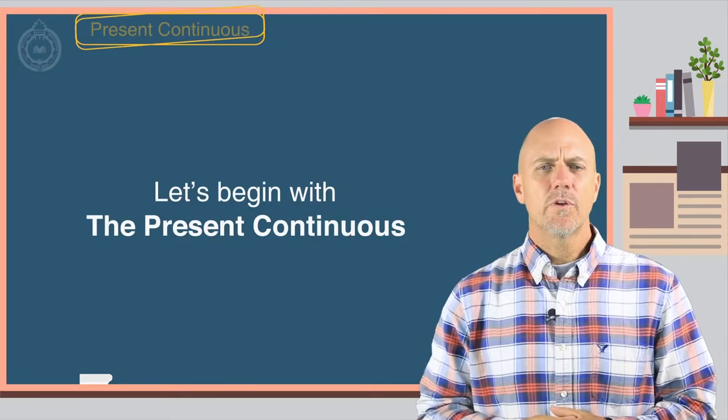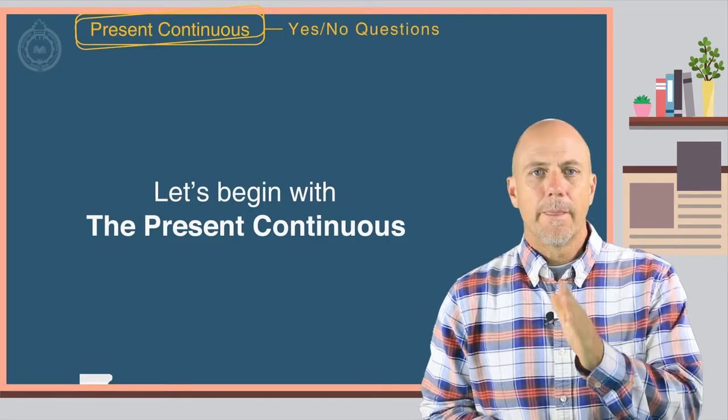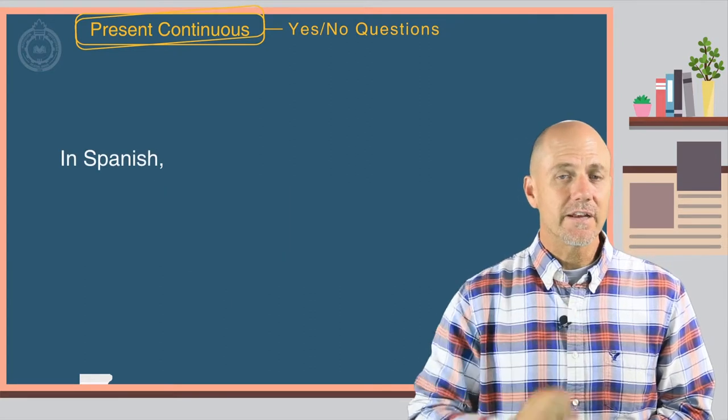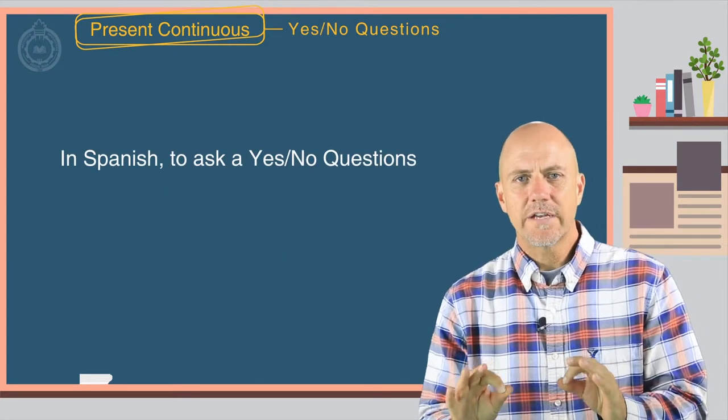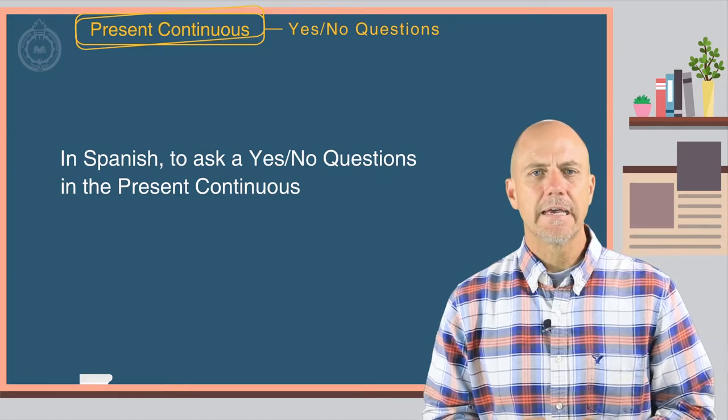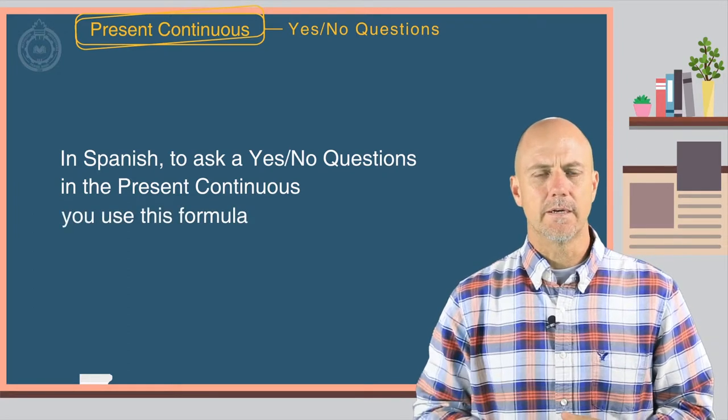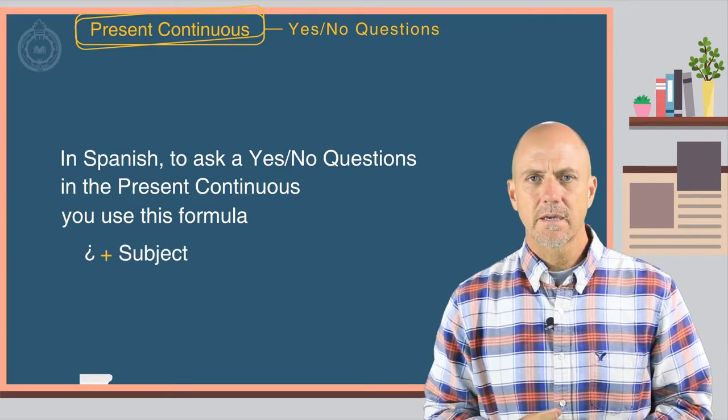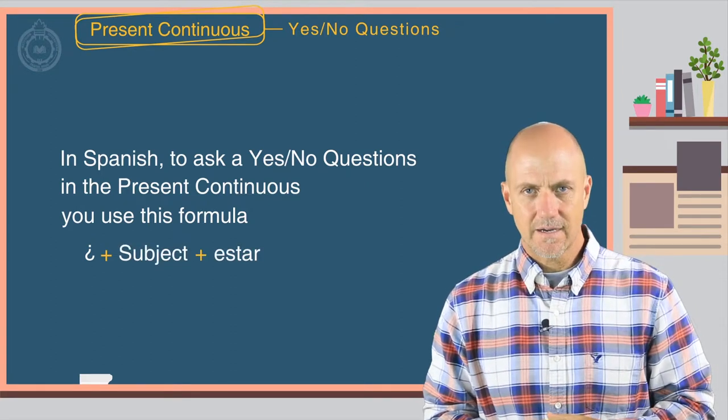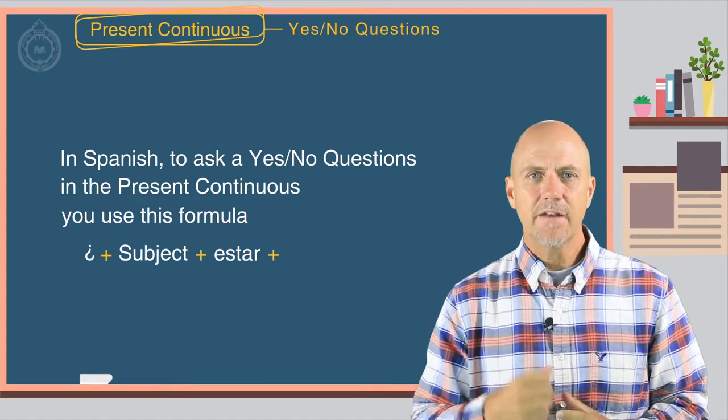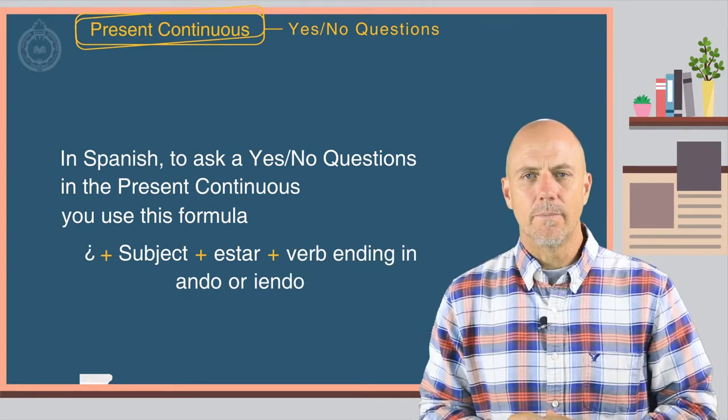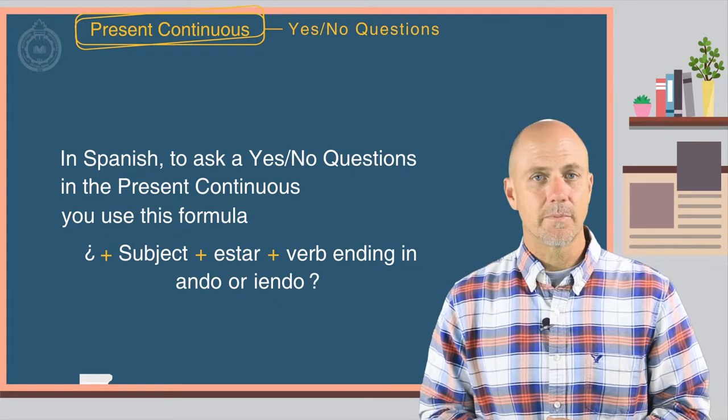Let's begin with what you already know, the present continuous in Spanish. In Spanish, to ask a yes-no question in the present continuous, you use this formula: the question mark plus the subject, plus the verb estar, plus the main verb ending in ando or yendo, and another question mark.